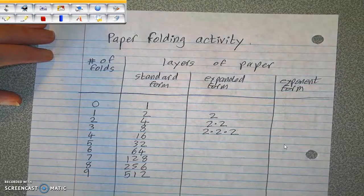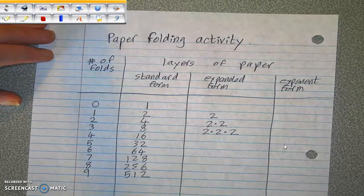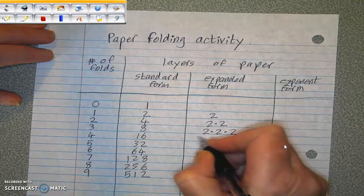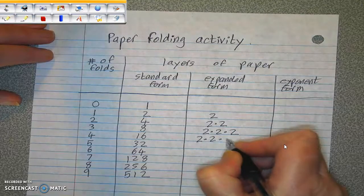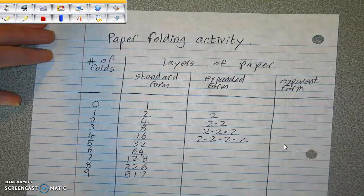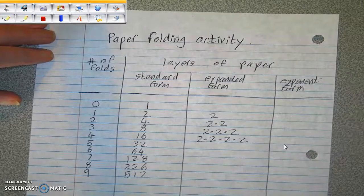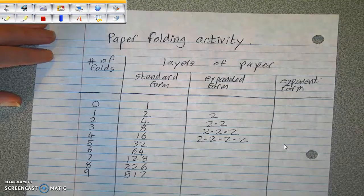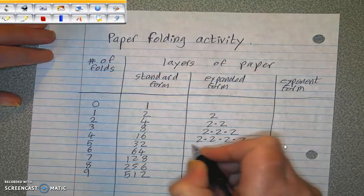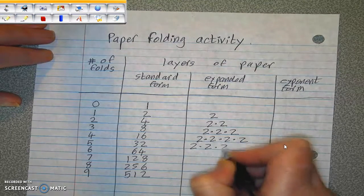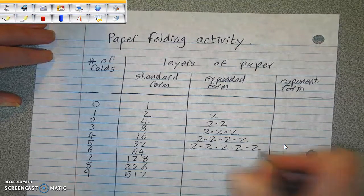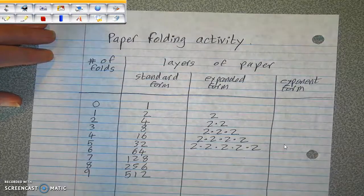2 times 2 is 4. Multiply that by 2 again, and you get 8. 16 is 4 factors of 2 multiplied together. 32 is 5 factors of 2 multiplied together.